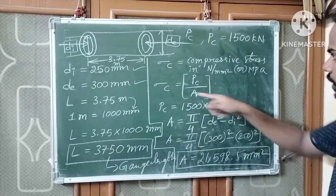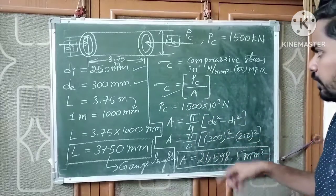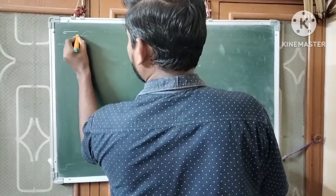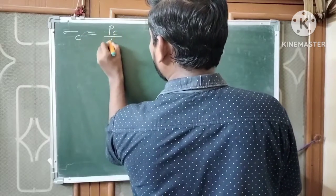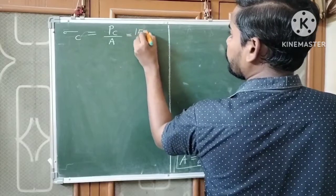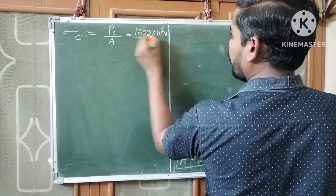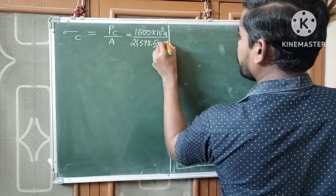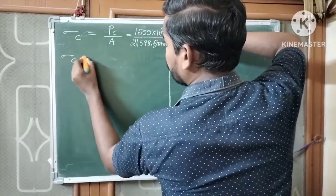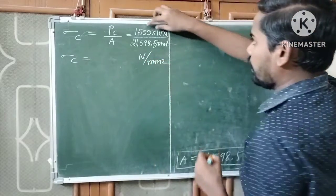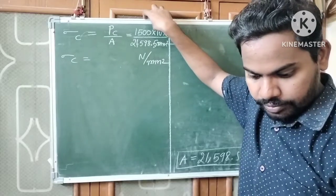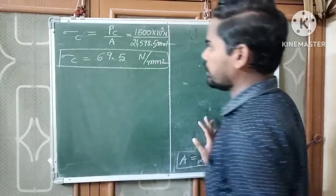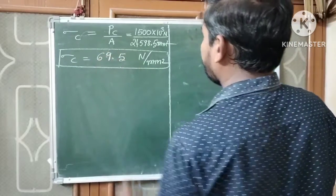Now we can find the compressive stress. Substituting P_C and A into σ_C = P_C / A: σ_C = (1500 × 10³) / 21598.5 ≈ 69.5 newton per mm squared. So the compressive stress in the column is approximately 69.5 N/mm².